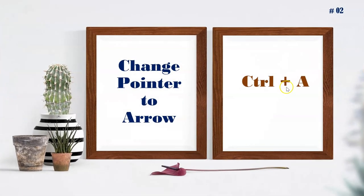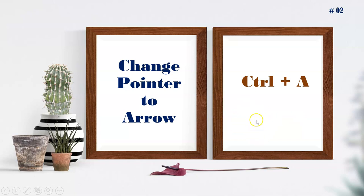The second shortcut: when you are already in laser pointer mode and want to convert it back to normal cursor or arrow mode, the shortcut is Ctrl+A. Once you press Ctrl+A, the laser pointer converts to an arrow cursor. This is the way we can switch from laser point to arrow mode.